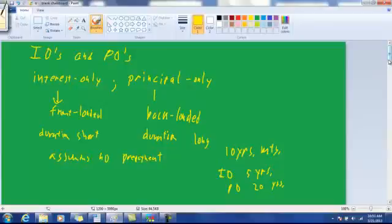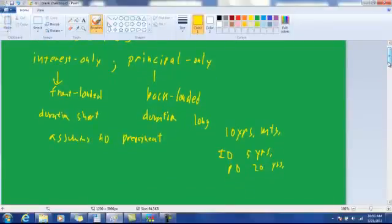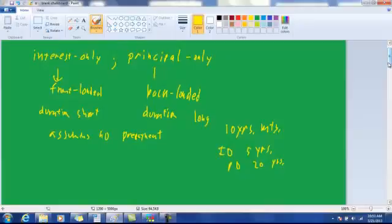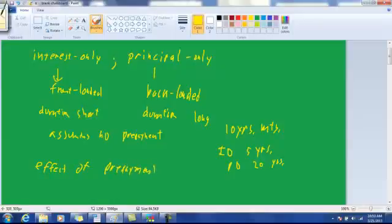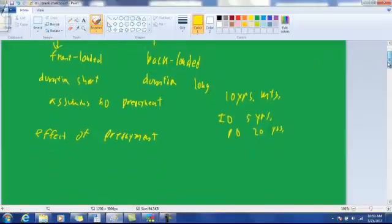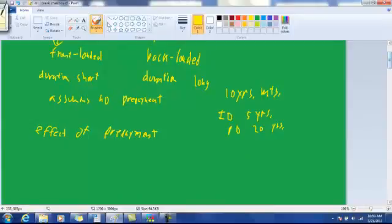But assuming no prepayment is really not what the IO and PO are about, because first of all, there really will be prepayments. And secondly, the prepayments will be correlated with interest rates, negatively correlated with interest rates. That is, as interest rates go down, prepayment speeds up.